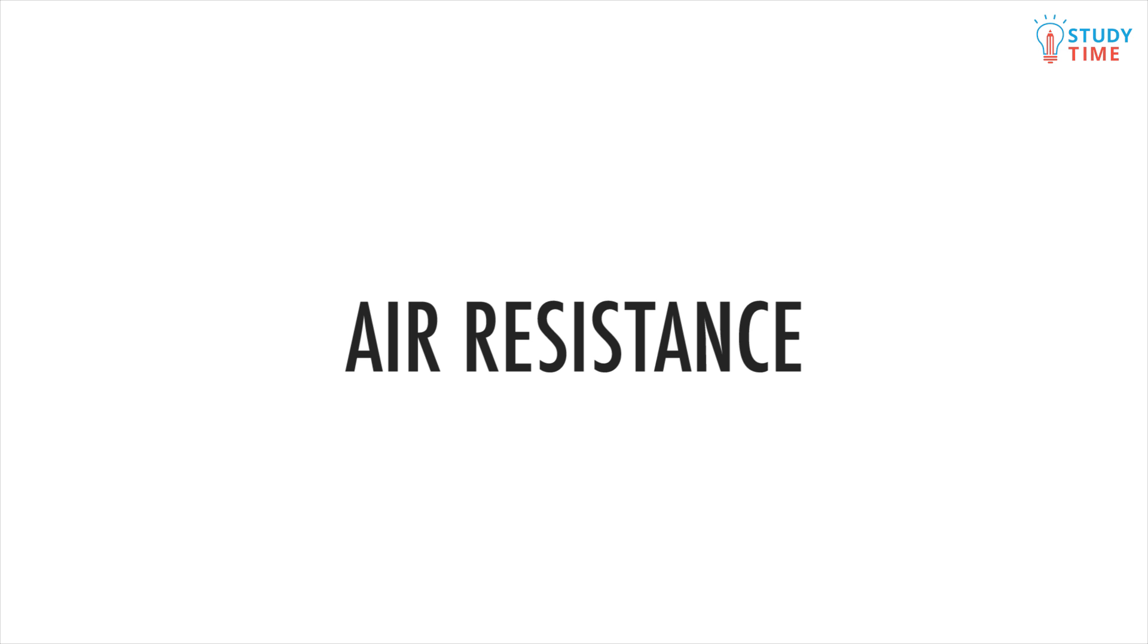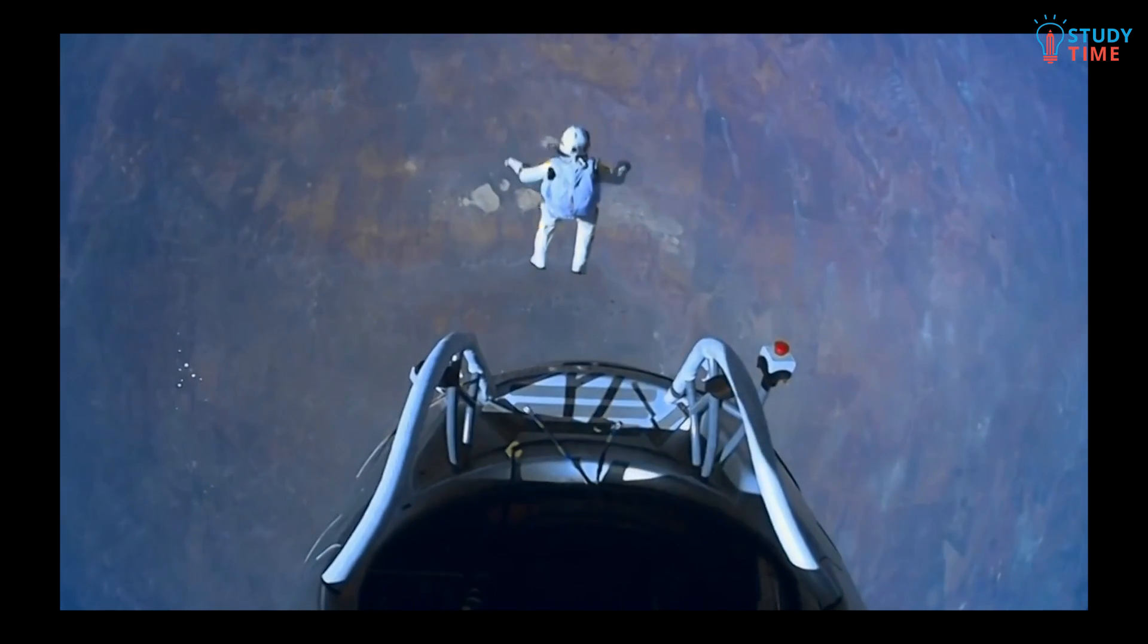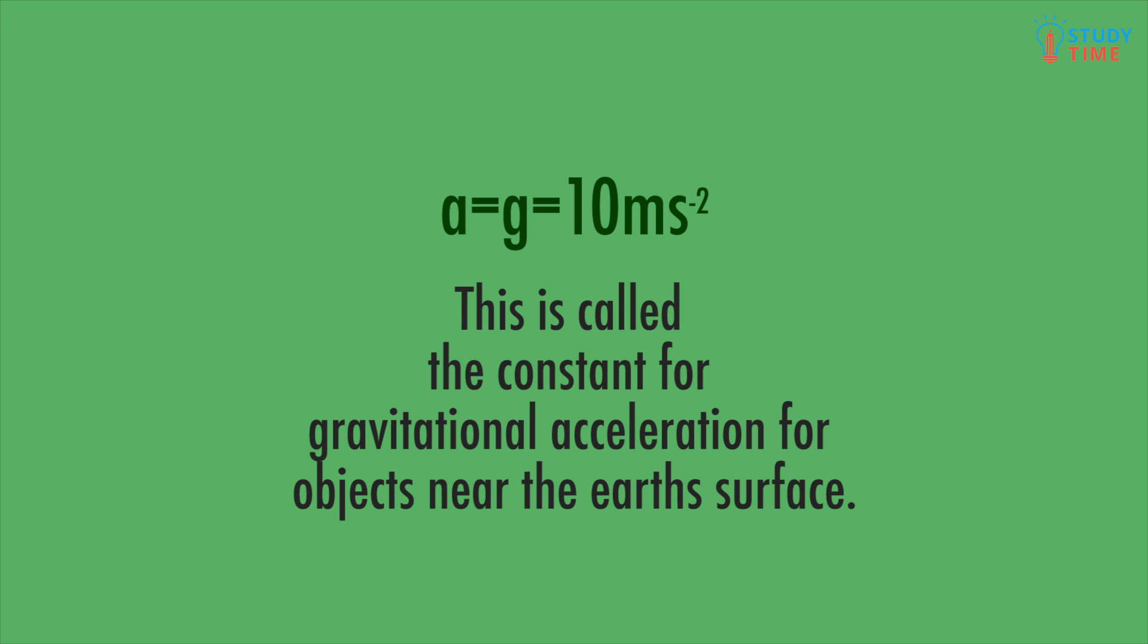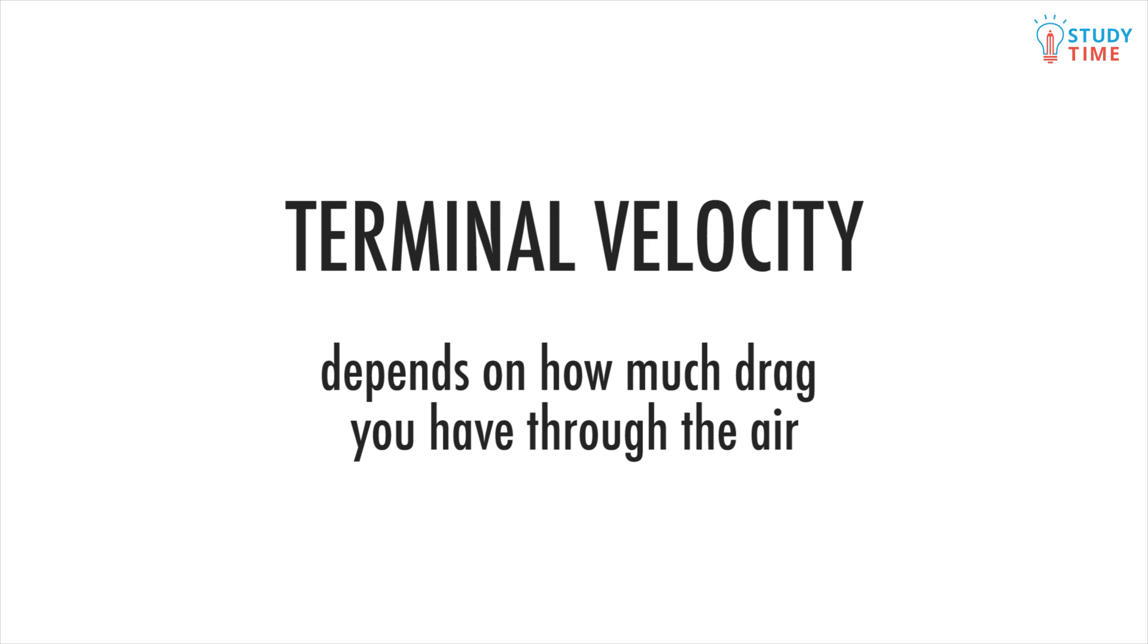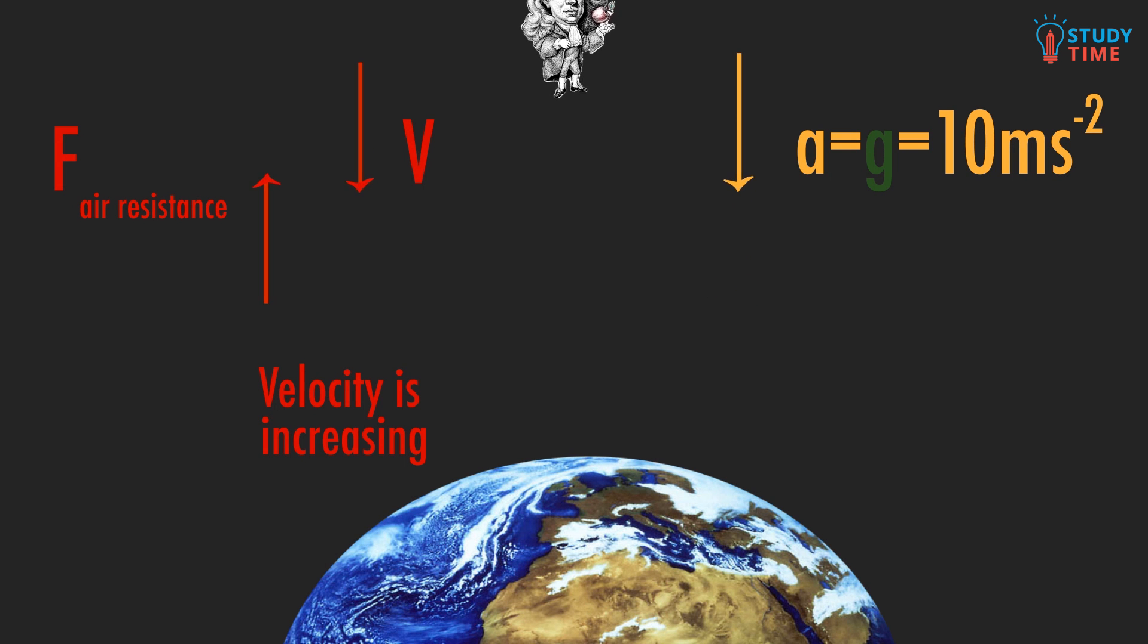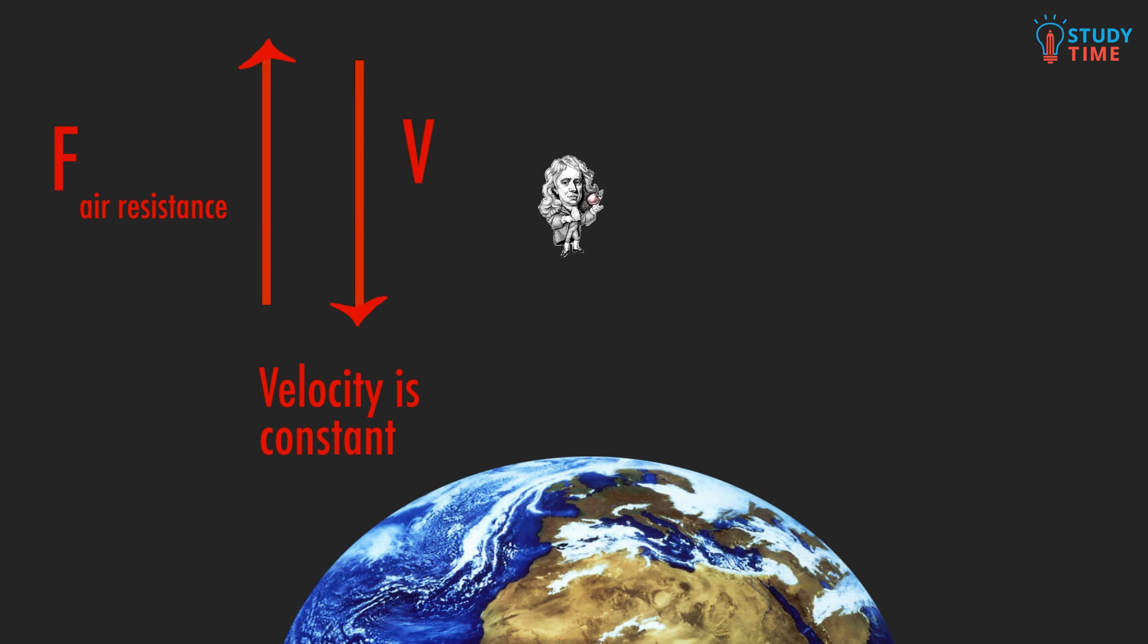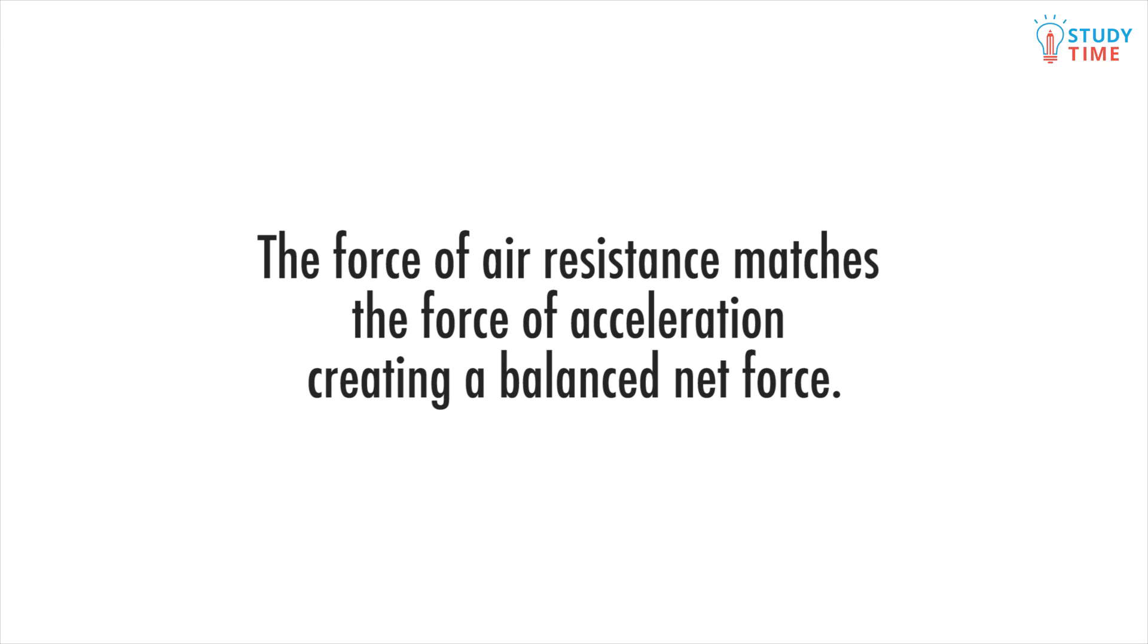The second type of friction is air resistance. Imagine you're falling towards earth. Remember the gravitational acceleration g of objects near earth? You're accelerating right? You get faster and faster. But then you stop accelerating and fall only at a constant speed. This is your terminal velocity and it changes depending on how much drag you have in the air. As you fall towards earth, the air in the atmosphere is pushing up against you. And eventually the resistance of the air against you becomes equal to the force of gravity pulling you down. This makes the net force zero and so is balanced and you stop accelerating.